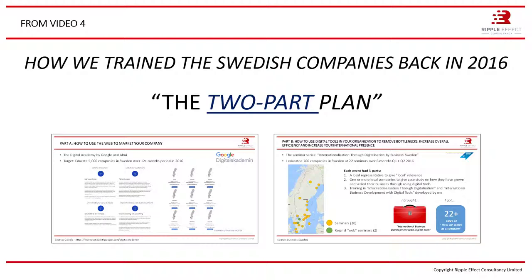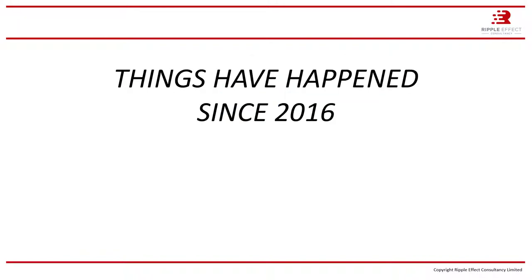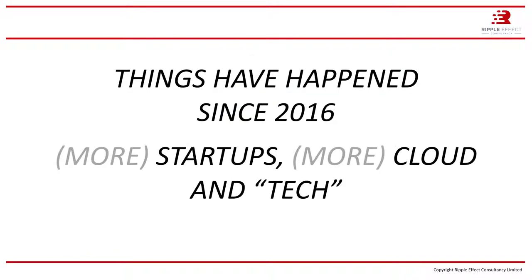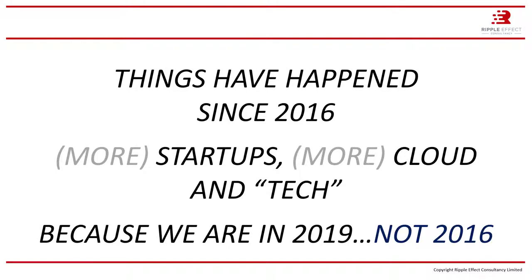As we saw in video 4, we created a two-part plan to train companies in Sweden based on research done in 2015. Part 1 was Google and the Digital Academy, with the goal to train 5,000 companies over 12 months. Part 2 was the Business Sweden seminar on internationalization through digitalization, where we trained 700 companies conducting 20 seminars and two webinars over a six-month period. At each location we had witness companies who told us how they had scaled themselves using digital tools.